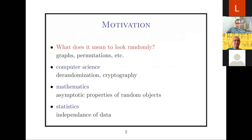I will be talking today about quasi-randomness. There will also be a little bit about graph limits. So let me start with general motivation. The motivation is to get a sense of what it means that something looks like a random object — be it a graph, a permutation, partial orders, hypergraphs, directed graphs, and so on. We will actually see four different kinds of these objects during this talk.